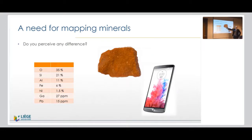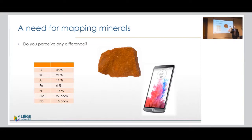The difference between laterite and smartphone has to do with the way these elements are arranged — here we have a lot of hydroxides, there we have metallic phases. It does mean that in terms of processing, no one would ever think about using the same process to extract iron or aluminium from this rock and from this kind of material. Definitely, the mineral speciation is essential. This seems obvious, but I can tell you many stories where people completely overlook this reality.